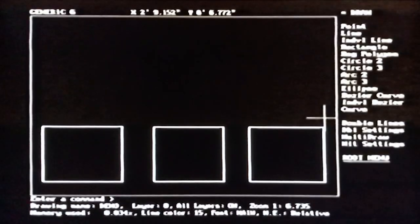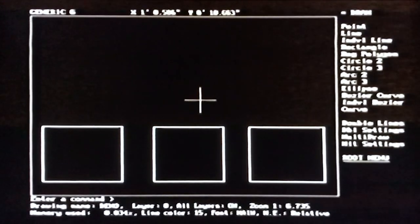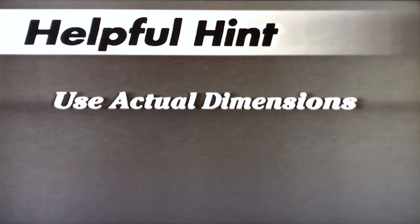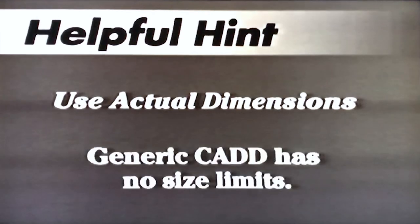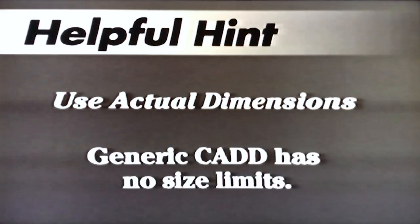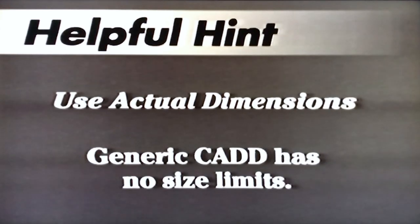Even though we entered 12 inches for the width of those boxes, they're obviously much smaller on the screen. In CAD's memory, everything is stored at the exact size you drew it — 12 inches by 12 inches in this case. They don't show up that way on screen only because of the particular way the drawing is displayed. When entering information, use the actual dimensions just as if drawing on paper at a one-to-one scale. Unlike manual drawing, you're not limited by the size of paper — you can think of Generic CAD as an electronic drafting board of unlimited size.